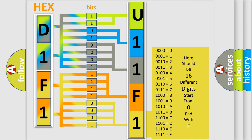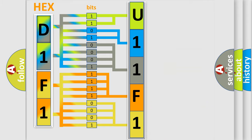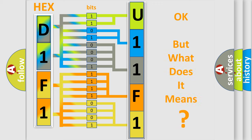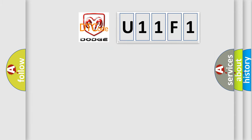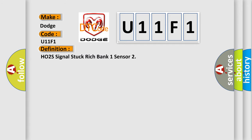We now know in what way the diagnostic tool translates the received information into a more comprehensible format. The number itself does not make sense to us if we cannot assign information about what it actually expresses. So, what does the Diagnostic Trouble Code U11F1 interpret specifically for Dodge car manufacturers? The basic definition is: HO2S Signal Stuck Rich Bank 1 Sensor.